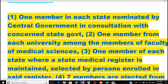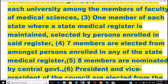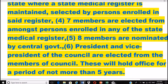One member of each state where a state medical register is maintained, selected by persons enrolled in said register. Seven members are elected from amongst persons enrolled in any of the state medical registers, and eight members are nominated by the central government. The president and vice president of the council are elected from among its members and hold office for a period of not more than five years.